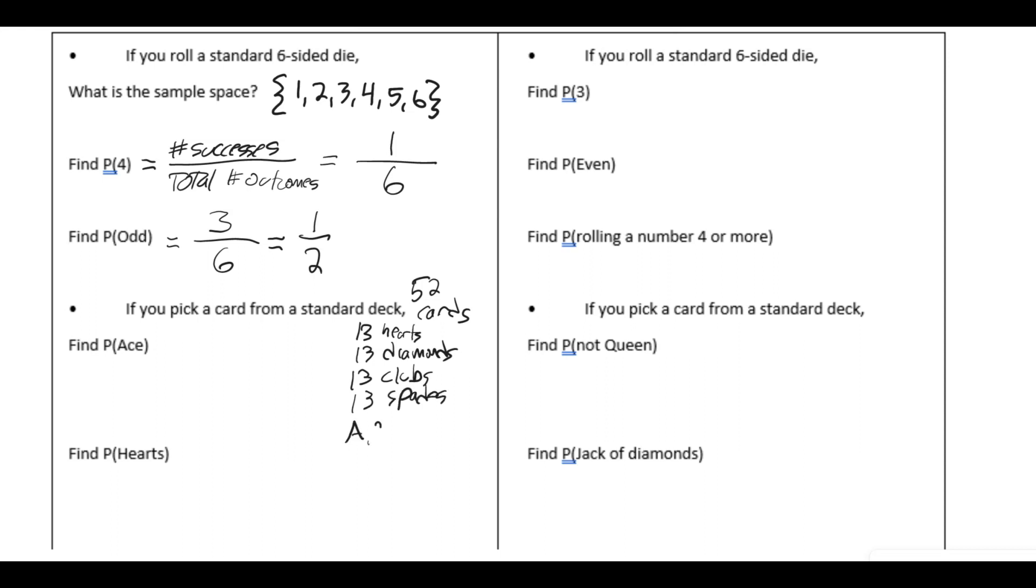13 clubs, and 13 spades. There's ace, two, three, up to 10, and then a jack, and a queen, and a king. Those are the different types of cards.